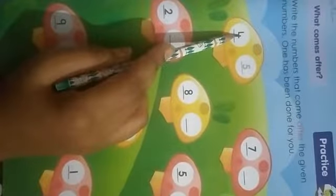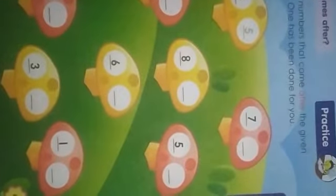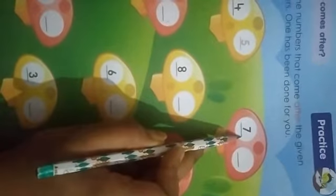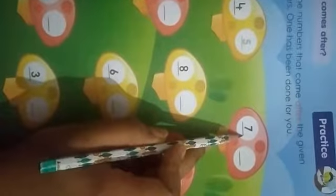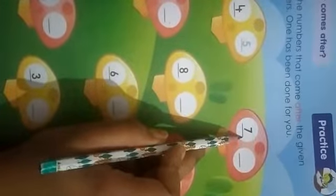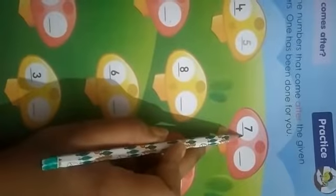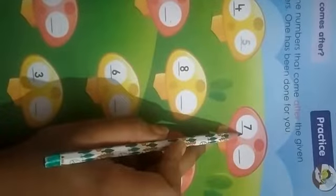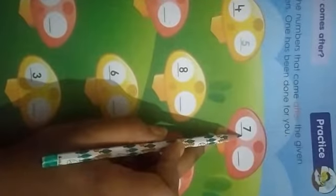Look, it's already done for us, number 5. Next, which number is this? 7, number 7. What comes after 7? Count: 5, 6, 7, 8. What comes after 7? 8, number 8.